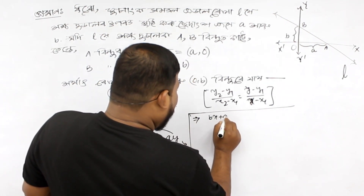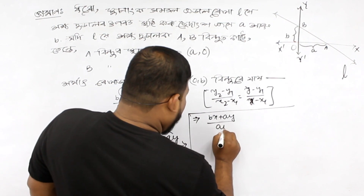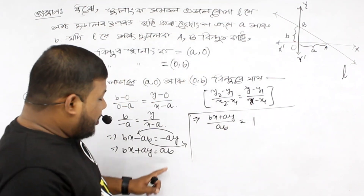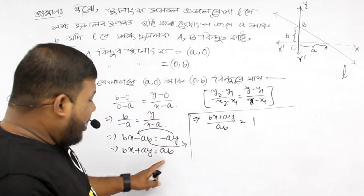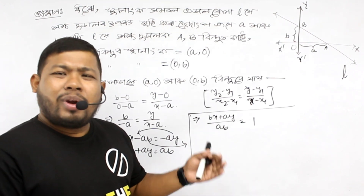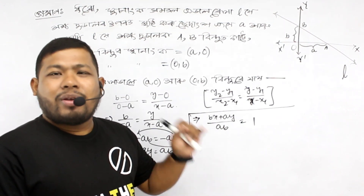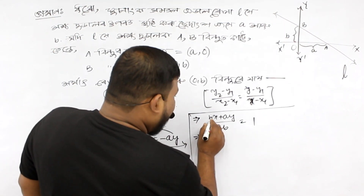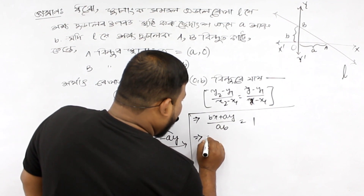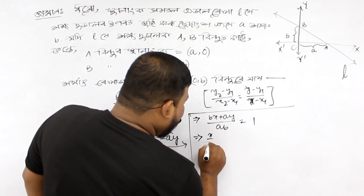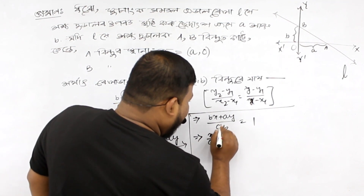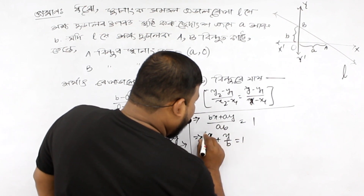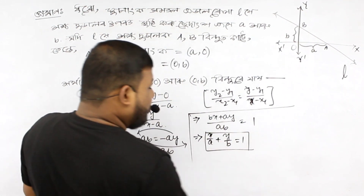bx plus ay divided by ab equals 1. We divide through: b cancels giving x over a, and a cancels giving y over b, so x/a plus y/b equals 1. This is the equation — the intercept form of a line.